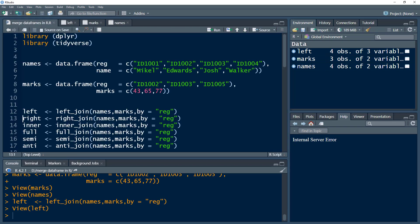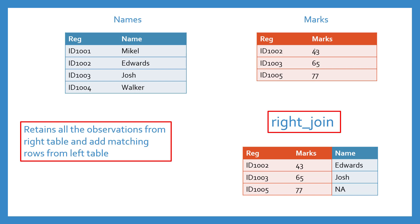Let's move to right join. In right join, it retains all the observations from the right table — it is exactly the opposite of left join. In left join we retain all values from the left table, but in right join it retains all values from the right table and adds matching rows from the left table. We had three individuals in the right-hand table: 102, 103, and 104, with their marks and relevant names from the names table. Although 1001 and 1004 were in the names table, they are left out. What about 1005? It was in the marks table but not in the names table, so it gets an NA value in the names column.